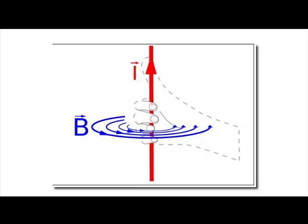So, in the figure, if we consider the thumb to be along the axis and the fingers in the anti-clockwise sense, then the thumb will be in the upward direction. The thumb will indicate the direction of vector delta theta, vector omega, and vector alpha.